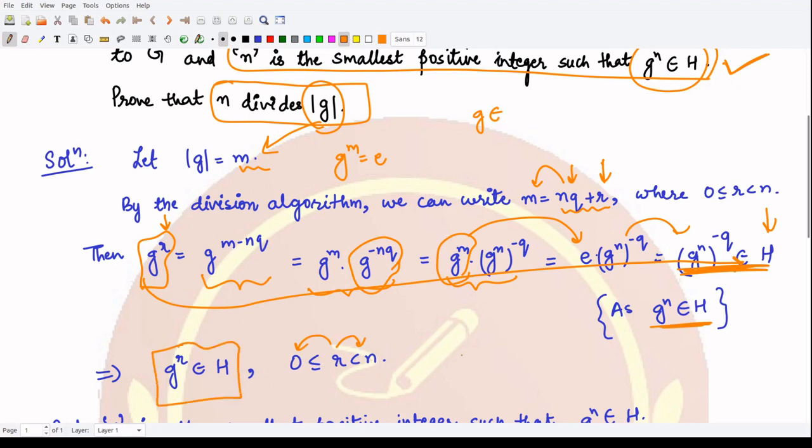Now this gives you a contradiction to the given condition. What is this contradiction? You now found a number r which is less than n such that when you raise it to power g you are present in H. However we are given n as the smallest positive number of such kind, so this is a contradiction on the smallest part.